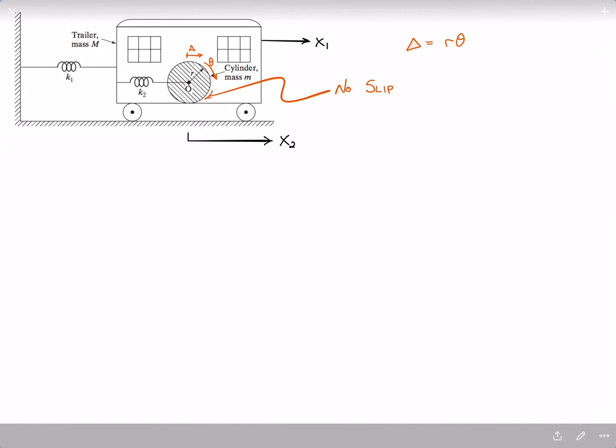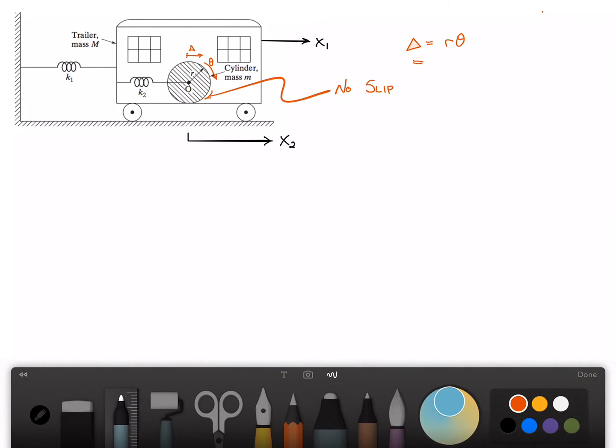This is to say that the time derivative of Delta, Delta dot, is equal to r times theta dot.